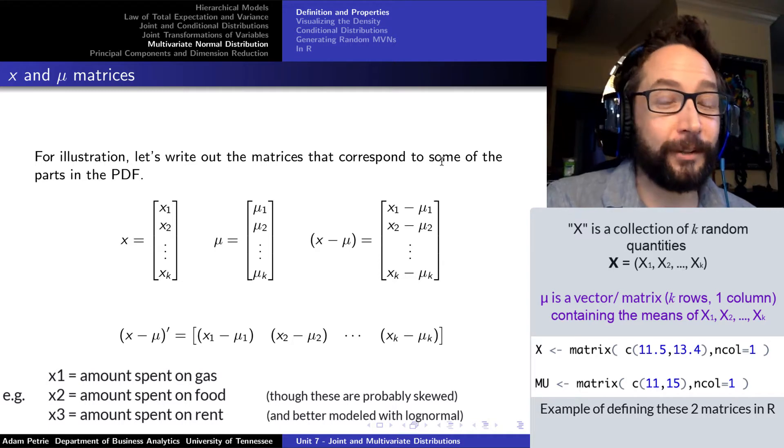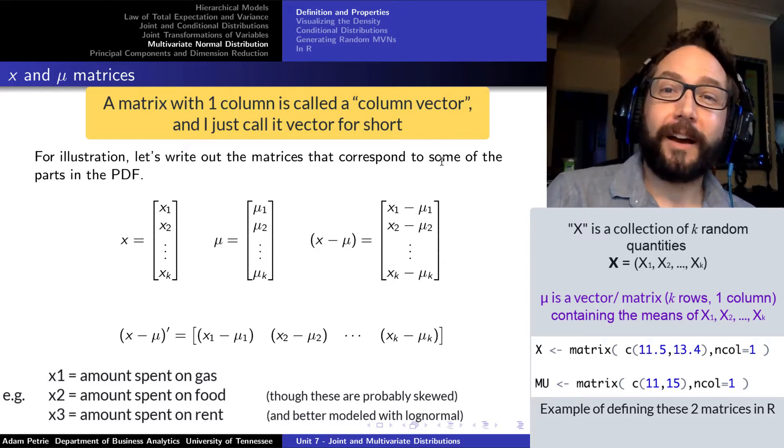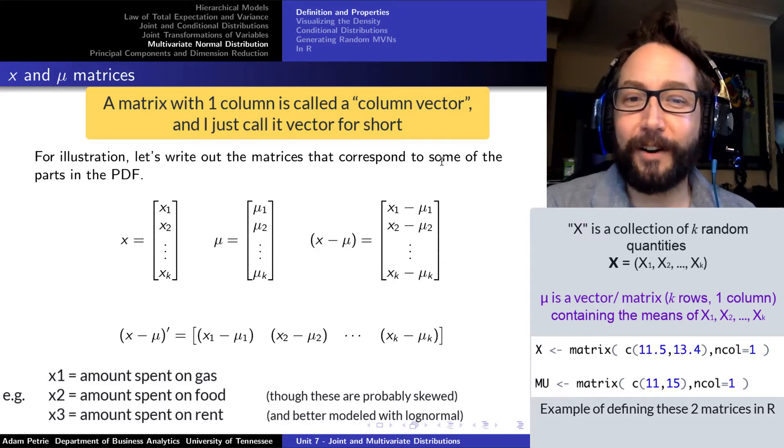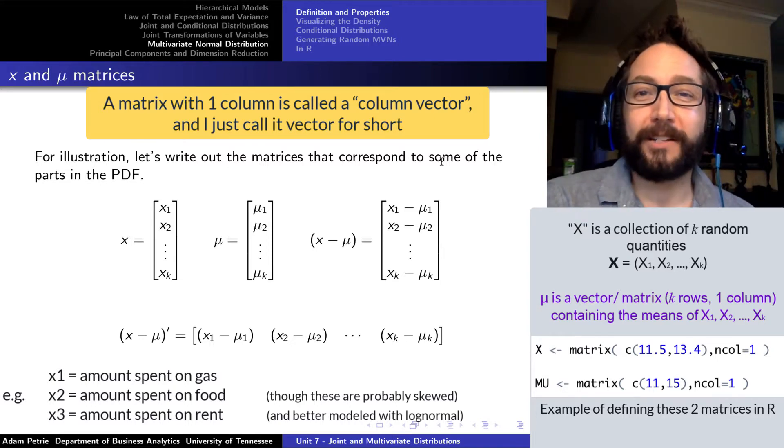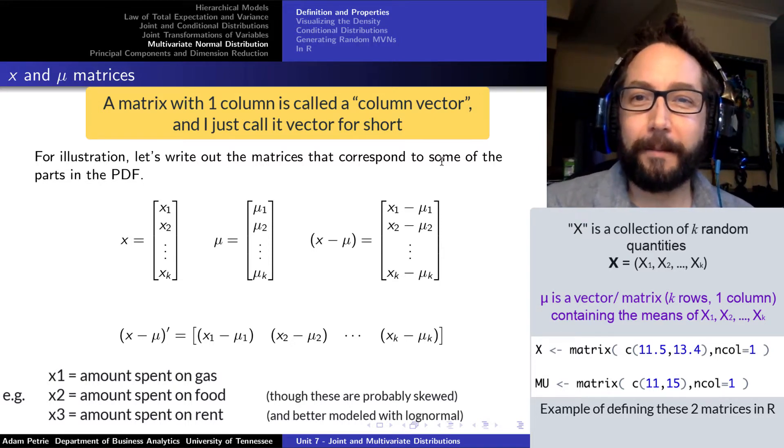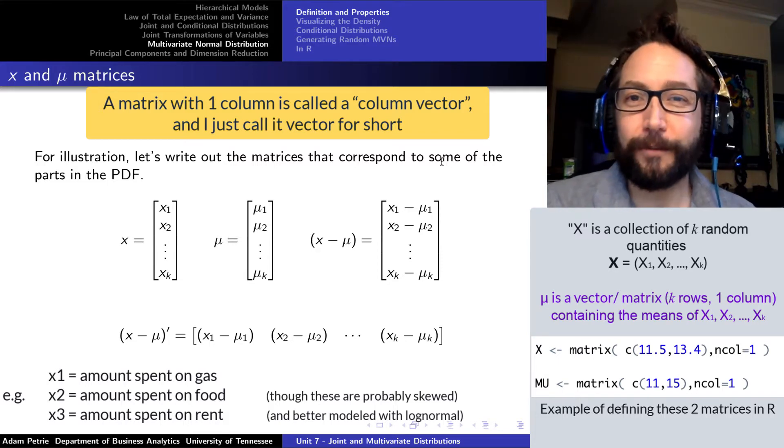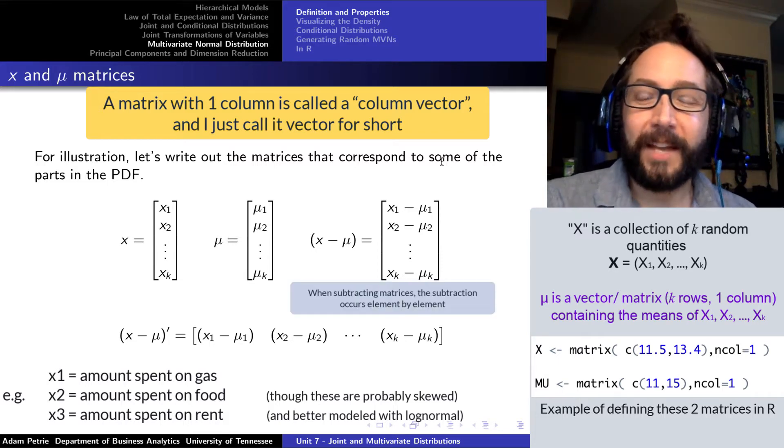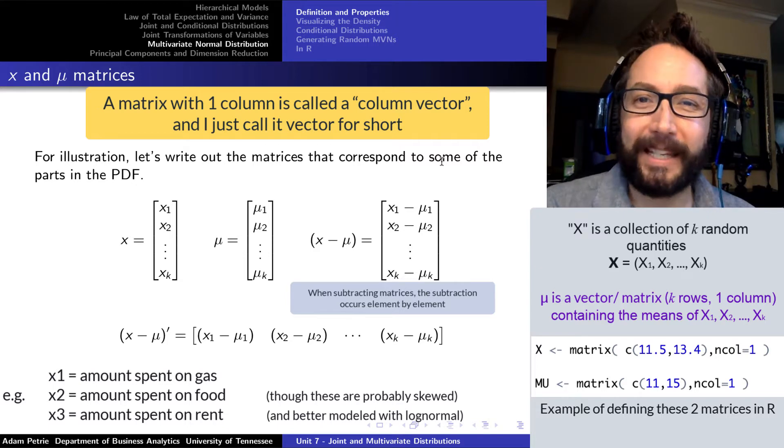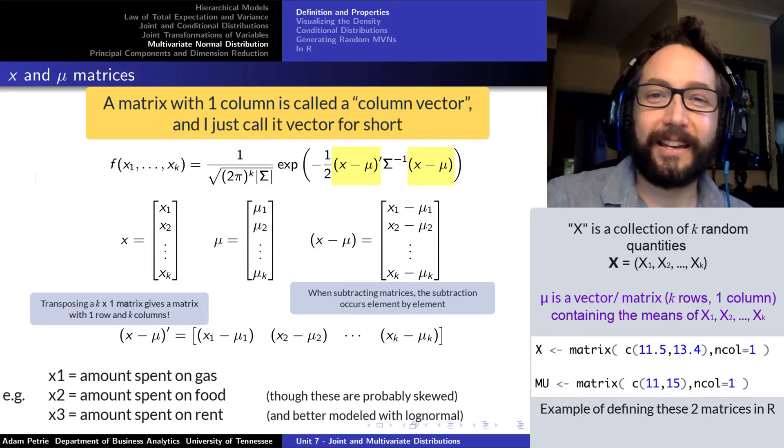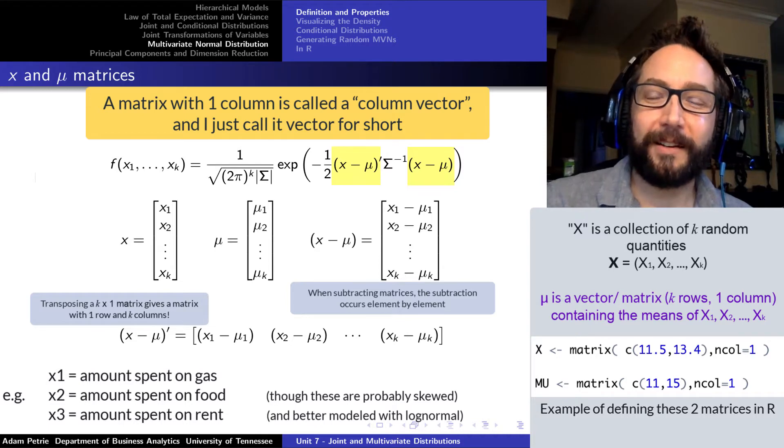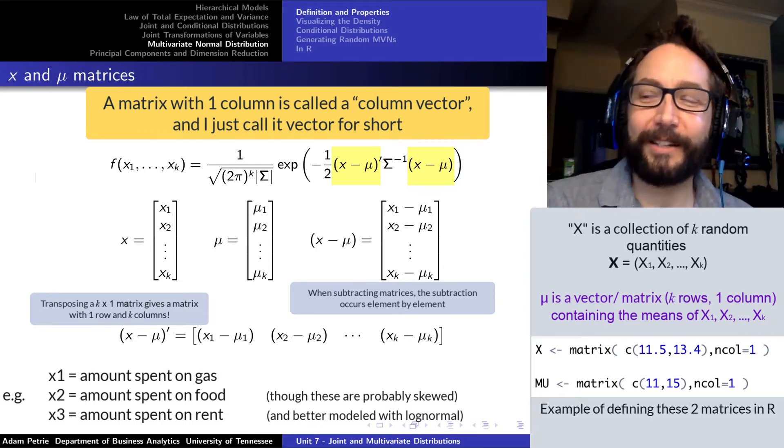So what goes into the formula for that joint PDF of the multivariate normal? Well, once again, x isn't just a single value, it's a whole vector describing the actual values of, let's say, k random quantities. Mu is a matrix giving us a matrix of the k mu's for each of the random quantities. And so when we deal with the stuff up in the exponent of that PDF, it's subtracting matrices together, taking transposes of matrices. So it's kind of a big deal.